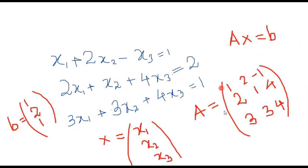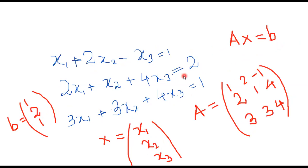This can be represented in the form of a matrix as AX = B, where A is the 3x3 matrix of all the coefficients of the respective variables. X is a column matrix of X1, X2, X3, and B is another column matrix of the constants, which is 1, 2, and 1.